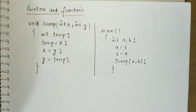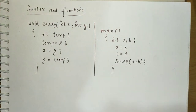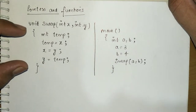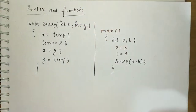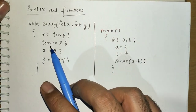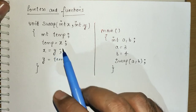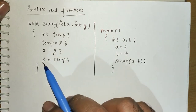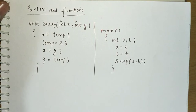In this video we'll see how pointers and functions are related. By convention, the algorithm to swap two variables uses three lines of code: we take a temporary variable, put the value of the first variable into it, then put the second variable's value into the first variable, and then temp's value into the second variable.